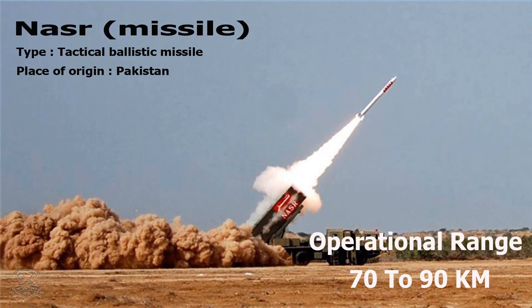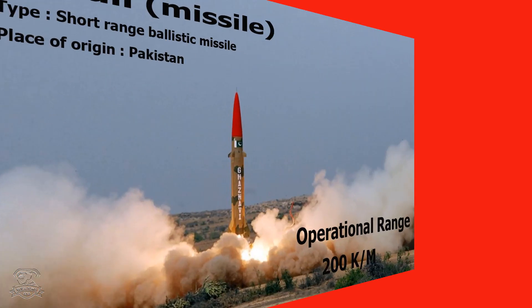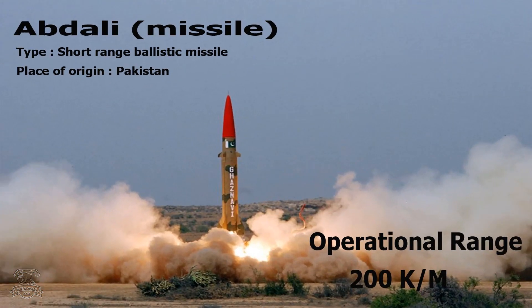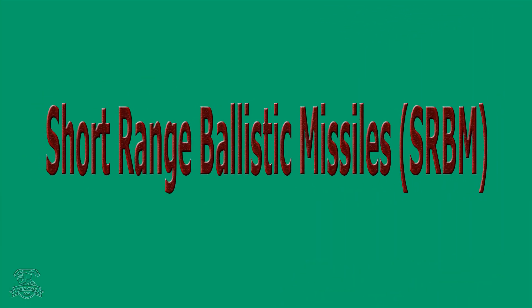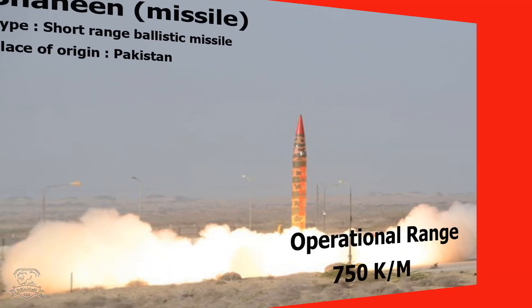Nassar Missile: Type – Tactical Ballistic Missile, Place of Origin – Pakistan, Operational Range – 70–90 km. Abdali Missile: Type – Short Range Ballistic Missile, Place of Origin – Pakistan, Operational Range – 200 km.